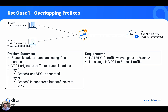We're going to use some public prefixes here to make this more obvious, which is of course not recommended in production. The requirements are: for traffic from VPC one going to branch two, we'll have to NAT VPC one. But for all other traffic from VPC one to branch one or any other parts of the network, we're not going to apply any changes.